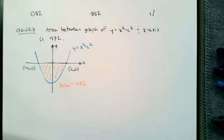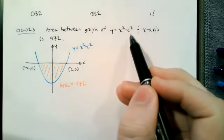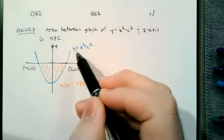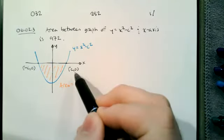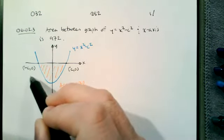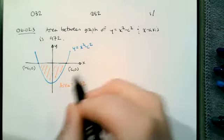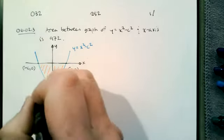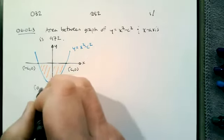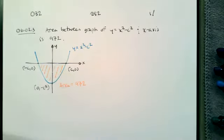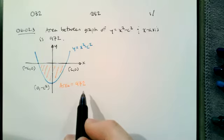So here's what we know. The graph of x squared minus c squared is going to be a parabola. It's going to have x-intercepts at c and negative c, because that's what makes this equal to zero. And we'll have a y-intercept at zero and negative c squared. We're told that the area is 972.